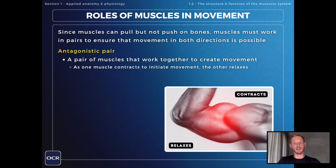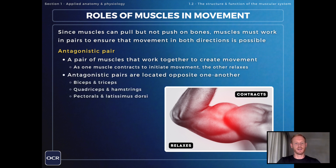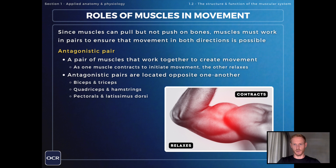The example provided here is the biceps and triceps. As the bicep muscle contracts to create flexion or bend the elbow joint, the tricep muscle on the back of the arm must relax to allow that movement to occur. Antagonistic pairs are located opposite one another in the body. Other examples include the quadriceps and hamstrings, and the pectorals and latissimus dorsi.